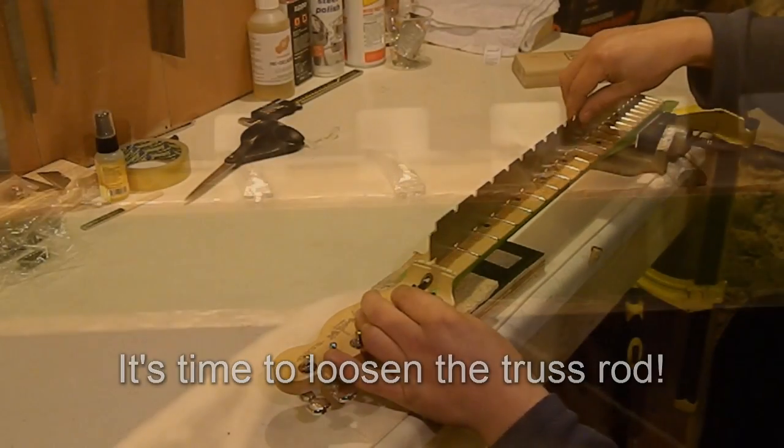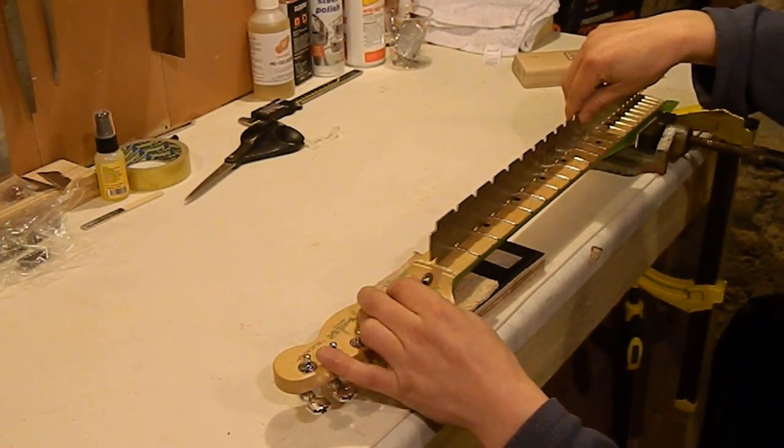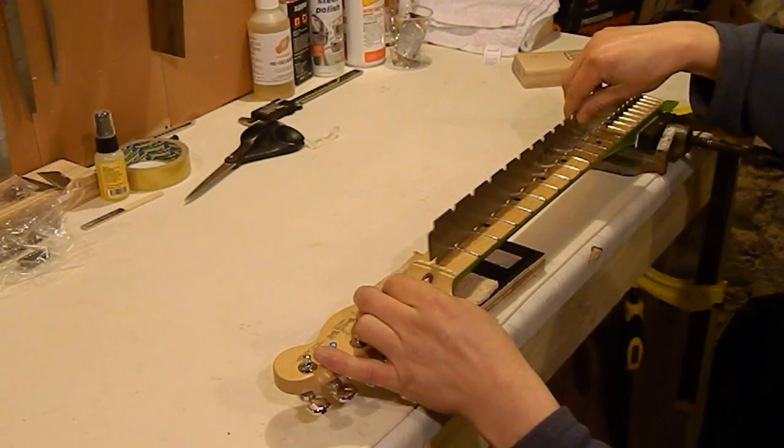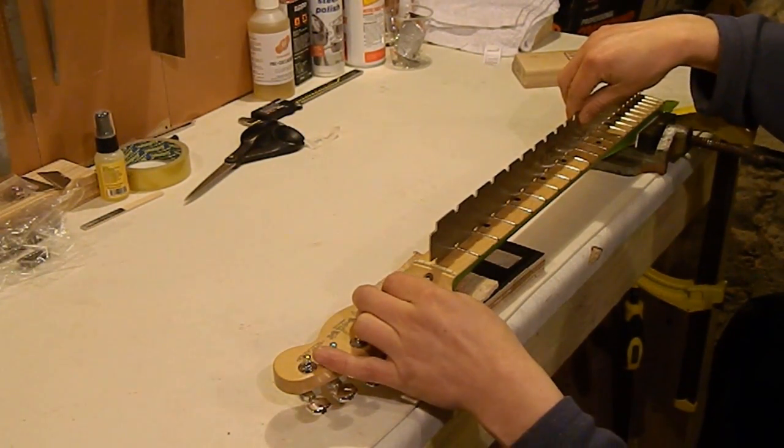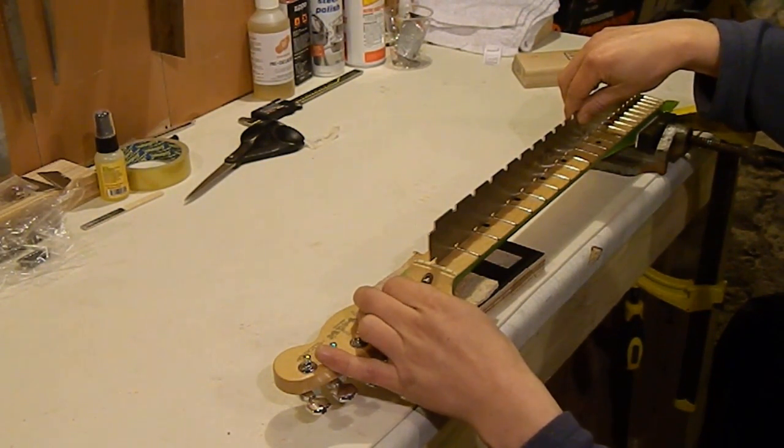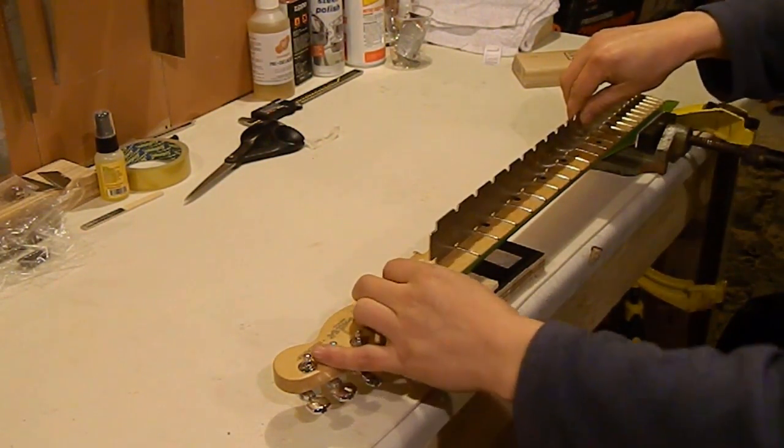You just want to make small careful adjustments here - an eighth of a turn, quarter of a turn. Don't be yanking it round and round. Keep checking with the straight edge to see what's happening with the neck, and once you get it straight all the way along, that's it done.